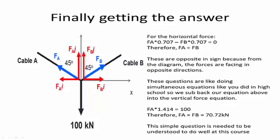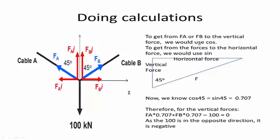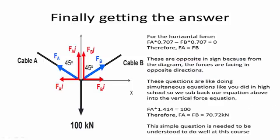So therefore, if we use this equation that we have here, and this equation, we can use simultaneous equations to find out that FA times 1.414 equals 100, then solve for FA. And being that FA equals FB, they are both equal to the exact same thing. So this simple question is needed to be understood, and to do well at this course.